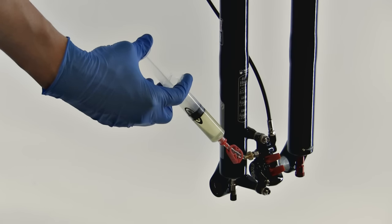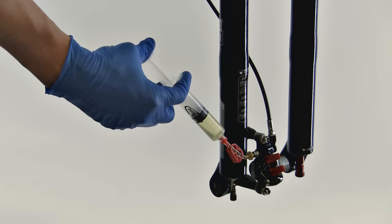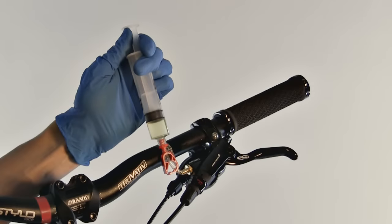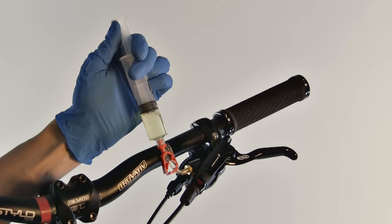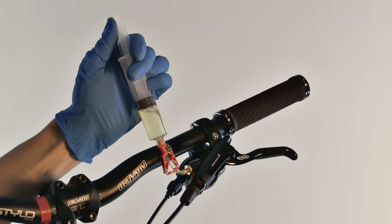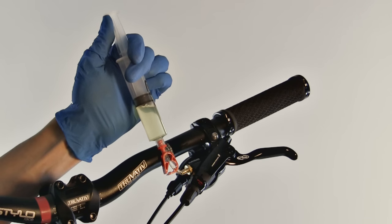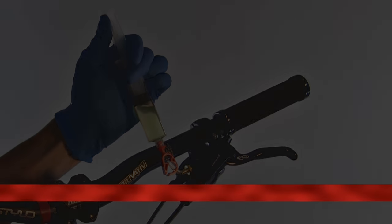Hold both syringes upright. Gently push on the caliper syringe plunger to move fluid from the caliper syringe through the system and into the lever syringe until the lever syringe is increased to one half full and the caliper syringe is decreased to one quarter full. You should also see air bubbles fill the lever syringe.